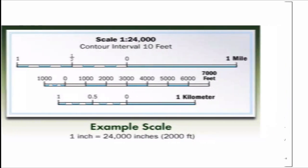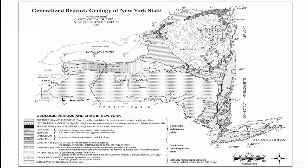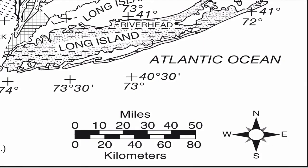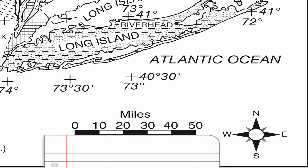For some of the maps in our reference table, like the generalized bedrock geology of New York State map, you can find a map scale at the bottom right. It tells you the distance on the map that's equivalent to the real-life distance. To figure out how far it is, you would use a piece of paper to mark off the beginning and end of a certain interval, then apply that to the map to find the distance you're looking for.